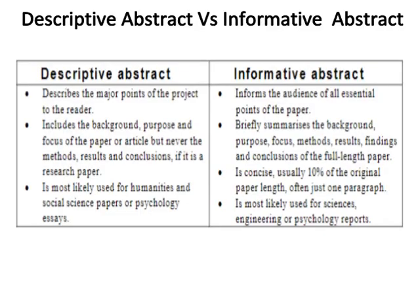Descriptive abstracts describe the major points of the project, while informative abstracts inform the audience of essential points of the paper. A descriptive abstract includes the background, purpose, and focus of the paper or article, but never the methods, results, and conclusions if it is a research paper. An informative abstract briefly summarizes the background, purpose, focus, methods, results, findings, and conclusions of the full-length paper. Descriptive abstracts are most likely used for humanities and social science papers or psychology essays, while informative abstracts are concise — usually 10% of the original paper length, often just one paragraph — and are most likely used for sciences, engineering, or psychology reports.